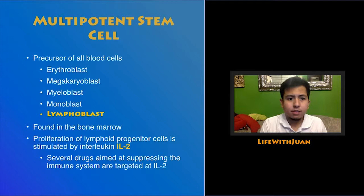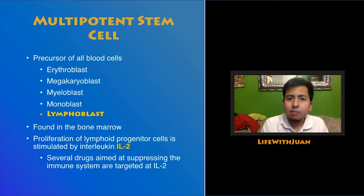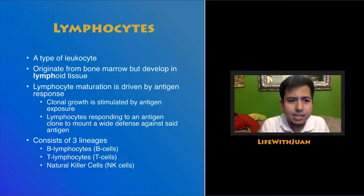These essentially derive from multi-potent stem cells, which are the precursor of all other blood cells as well. These are found in the bone marrow, and when exposed to IL-2, multi-potent stem cells will turn into lymphoid progenitor cells. That's why in several diseases like lymphoblastic leukemia, you want to suppress the production of lymphocytes, and hence you'll use drugs that inhibit IL-2 and its target. So what are lymphocytes?